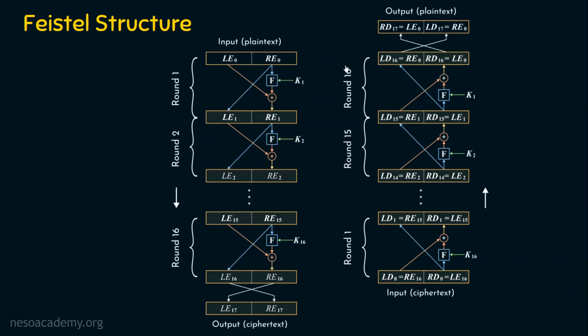After round 16 of decryption, we get a pre-output, which is not yet the original plain text. We need to perform one more operation — the swap. Just swap the left-hand side bits and the right-hand side bits, and whatever we get will be the output, which is the plain text. This is exactly what the Feistel structure is.